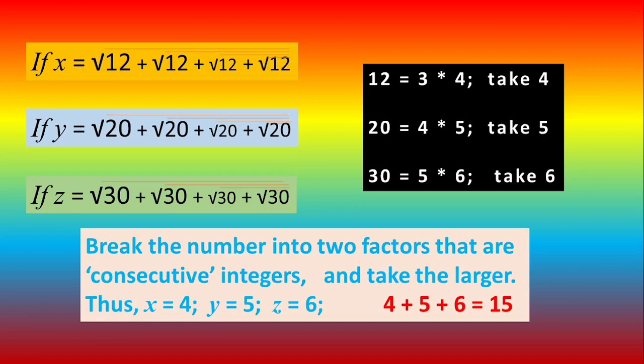So 12 is 3 into 4, take the larger number 4 because it is a plus sign. For minus sign you will take the smaller number. 20 equals 4 into 5, take the larger number 5. 30 equals 5 into 6, so take 6. In each case break it into two consecutive number factors and take the larger number.